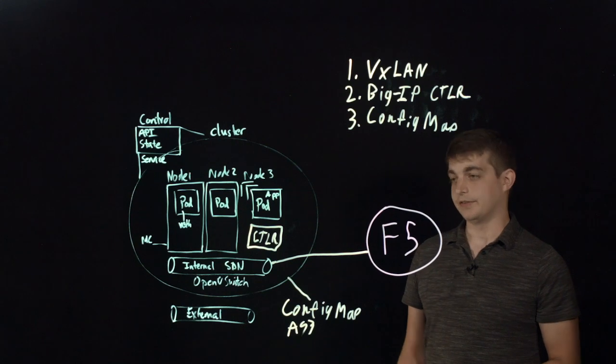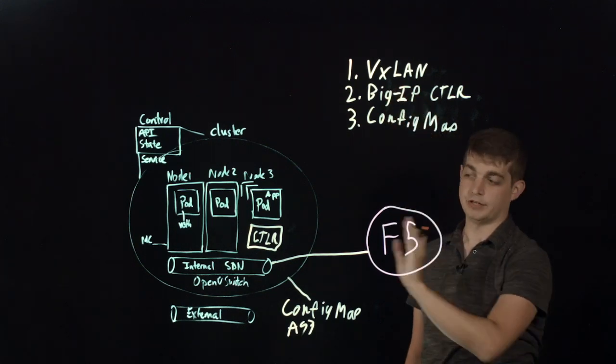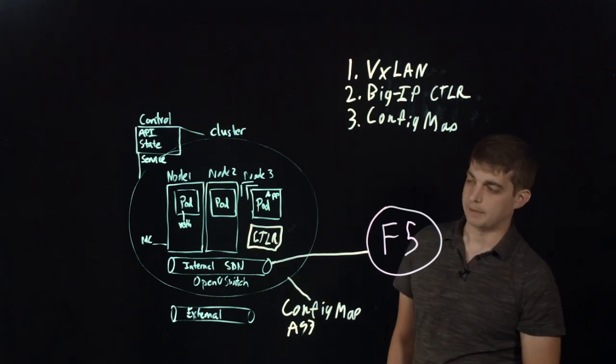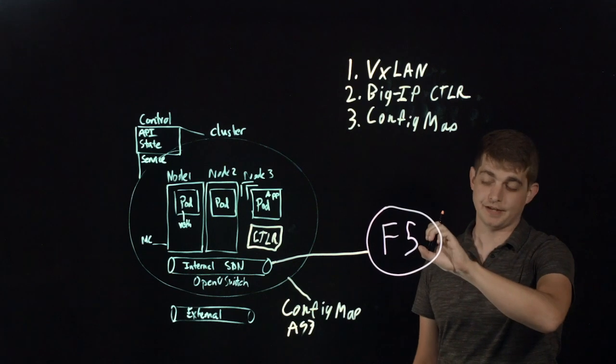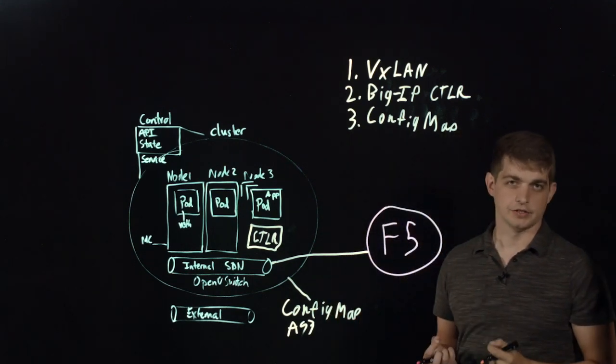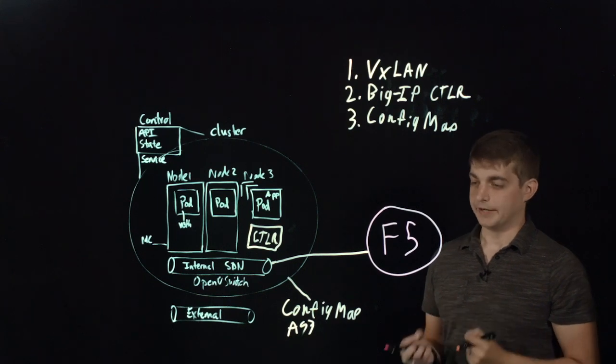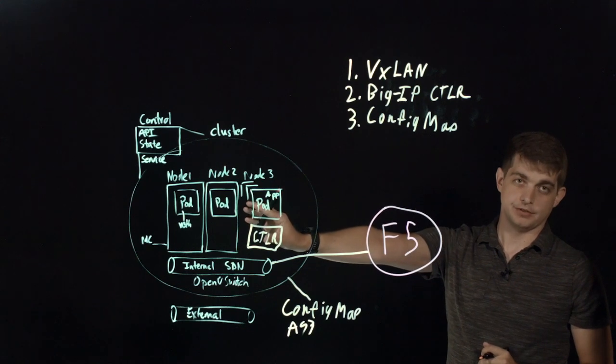So, this is basically it. There's three different pieces of VXLAN tunnel, again, that give us connectivity between our F5 and OpenShift. The BigIP controller that monitors the state of our OpenShift cluster and makes changes to the F5 device. And then the config map that basically defined the granular configurations that we want to have defined on our F5 device that map back to our pods within our OpenShift cluster.